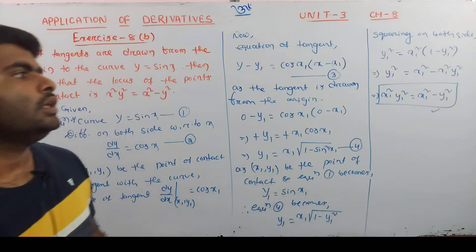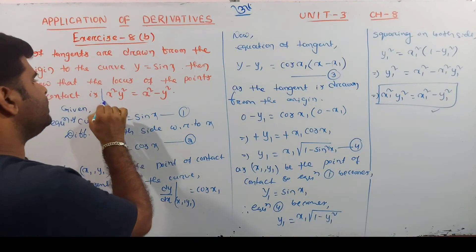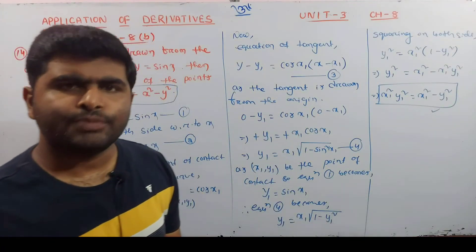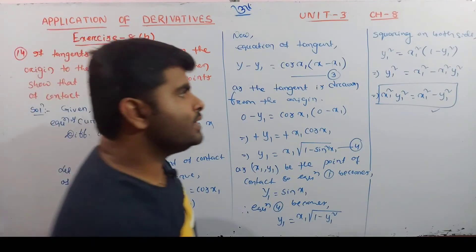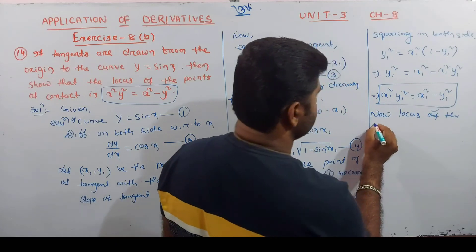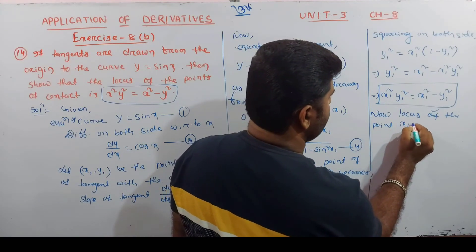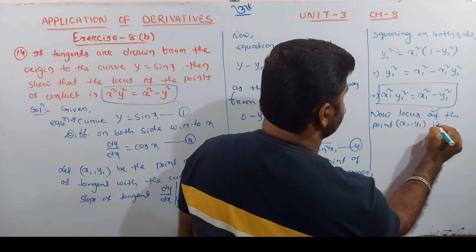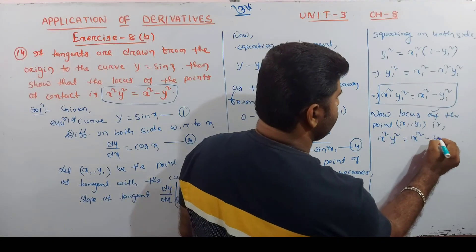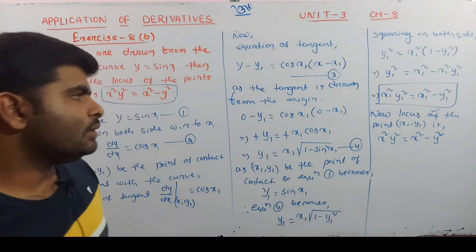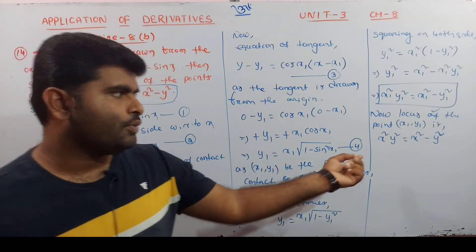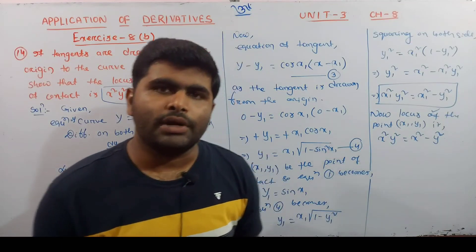Therefore x1²·y1² = x1² - y1². To find the locus, replace x1 and y1 with x and y in general form. So the locus of the point of contact is x²y² = x² - y². This is proven.